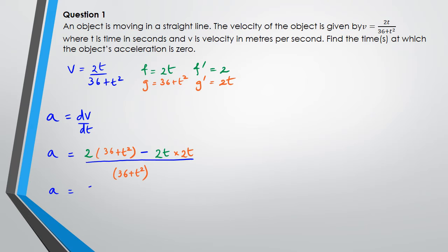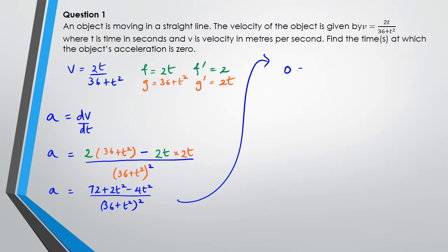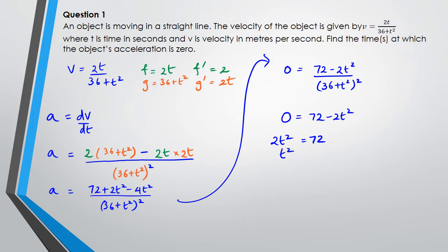Simplifying the numerator, I get 72 plus 2t² minus 4t², all divided by (36 plus t²) squared. Now we're trying to figure out when acceleration equals zero, so we set the numerator to zero: 72 minus 2t² equals 0. Rearranging: 2t² equals 72, t² equals 36, so t equals plus or minus 6 seconds.